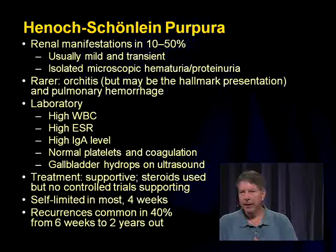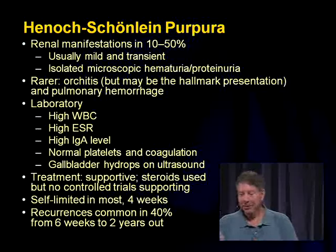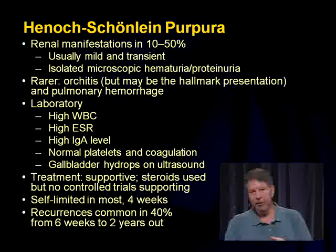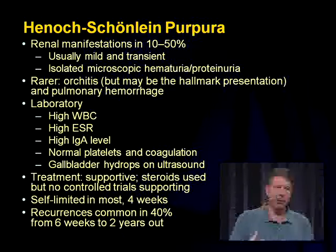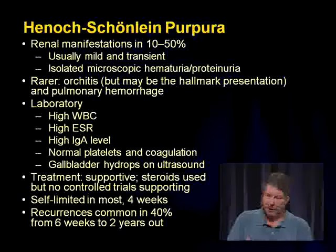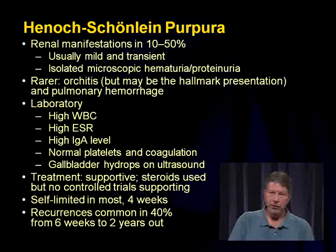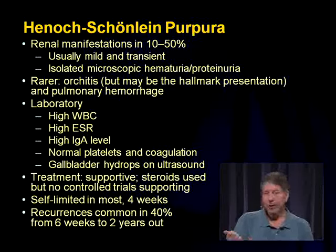Lab findings in HSP: high WBC, high SED rate, elevated IgA level, normal platelets. Gallbladder hydrops can be seen on ultrasound. Treatment is supportive. Steroids have been used but don't use them on the test — no controlled trials support steroid use. Most kids get better in four weeks. Important for the test: recurrences are common — 40% may have another episode anywhere from six weeks to two years later.